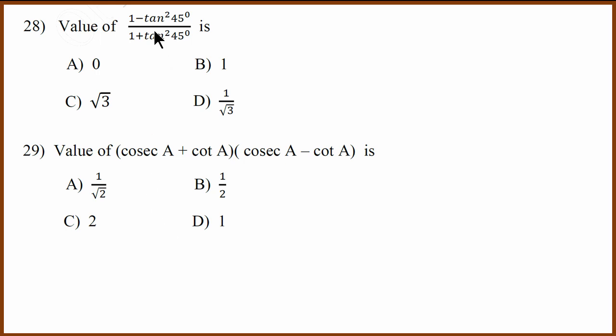Trigonometry question, 1 minus tan square 45 divided by 1 plus tan square 45 is 0, because tan square 45 is 1, and 1 minus 1 will be 0. 0 divided by anything is 0.